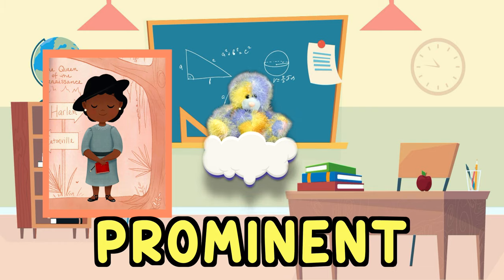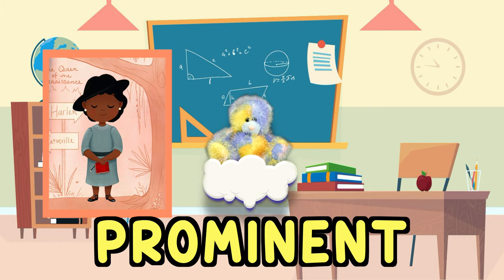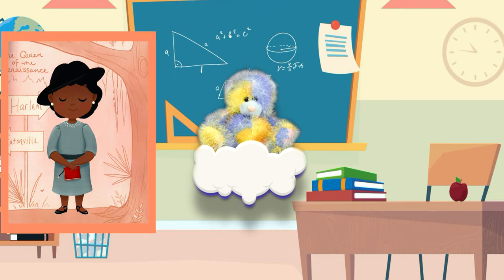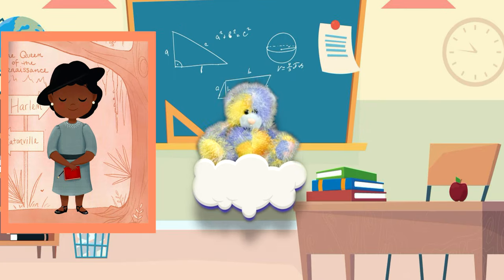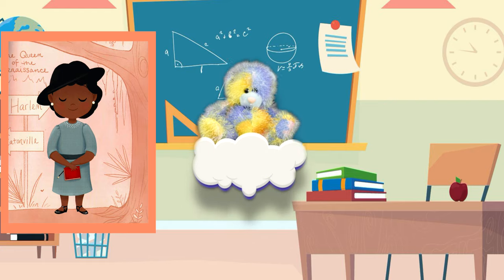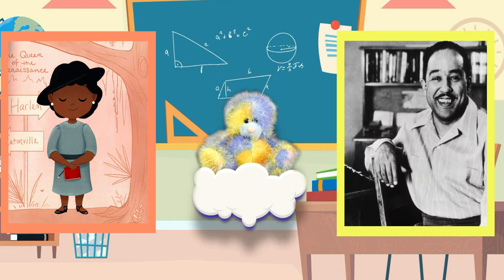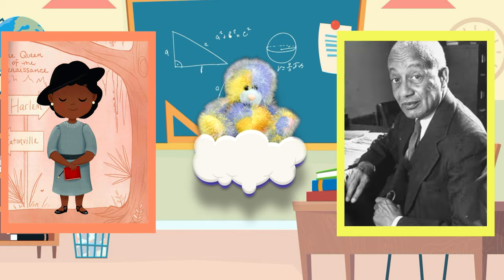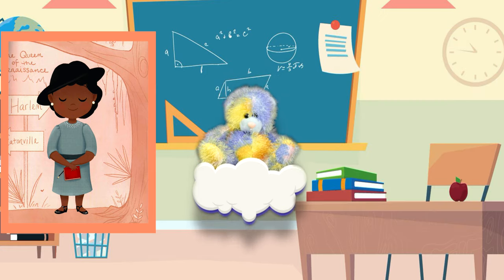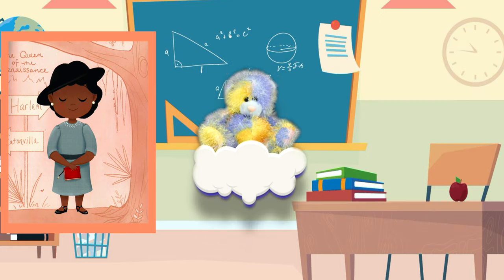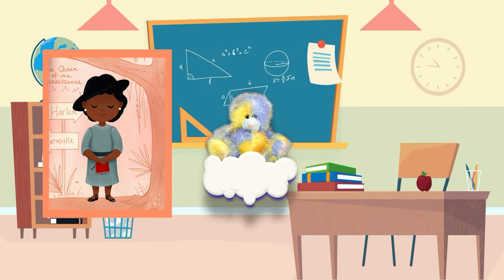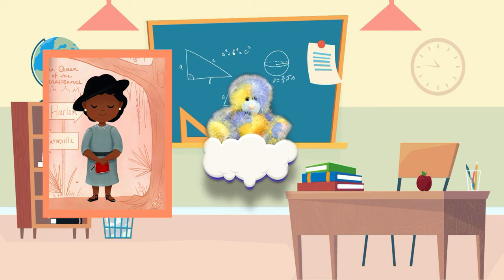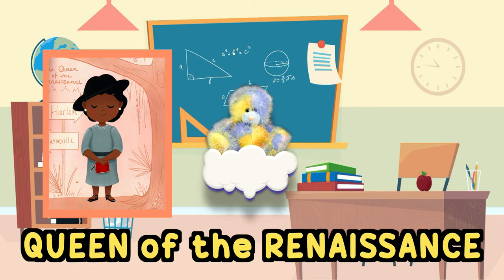Prominent means important or famous. Zora was the first black graduate of the all-women's Barnard College. She worked alongside famous creatives, including Langston Hughes, Countee Cullen, and Alain Locke, who were involved in the black artistic movement known as the Harlem Renaissance. Zora was even given the name Queen of the Renaissance.